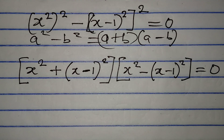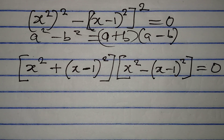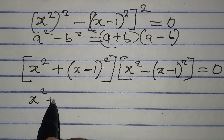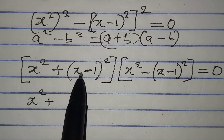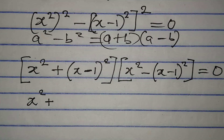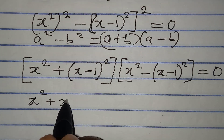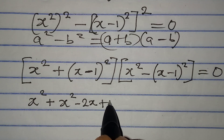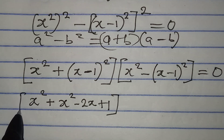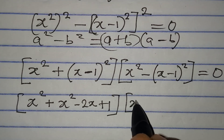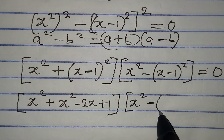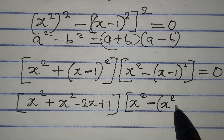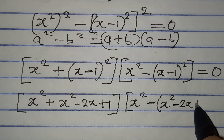Now I need to deal with the terms inside the brackets. In the first bracket, x squared plus, expanding (x minus 1) squared gives x squared minus 2x plus 1. In the second bracket, x squared minus, expanding (x minus 1) squared again gives x squared minus 2x plus 1.